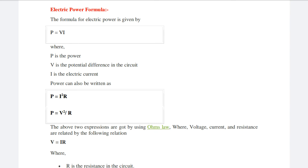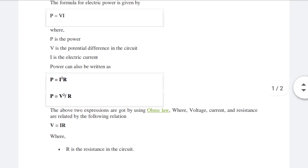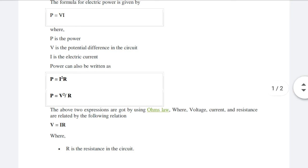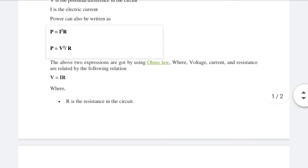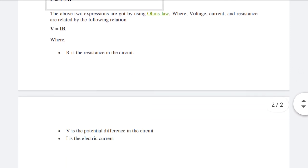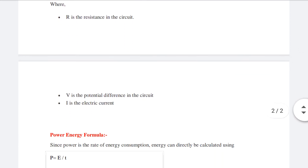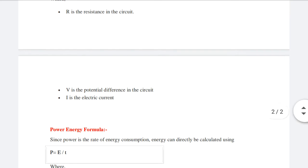The above two expressions are derived by using Ohm's law, where voltage, current and resistance are related by the following relation: V equals to IR. Here R is the resistance in the circuit, V is the potential difference in the circuit, and I is the electric current.